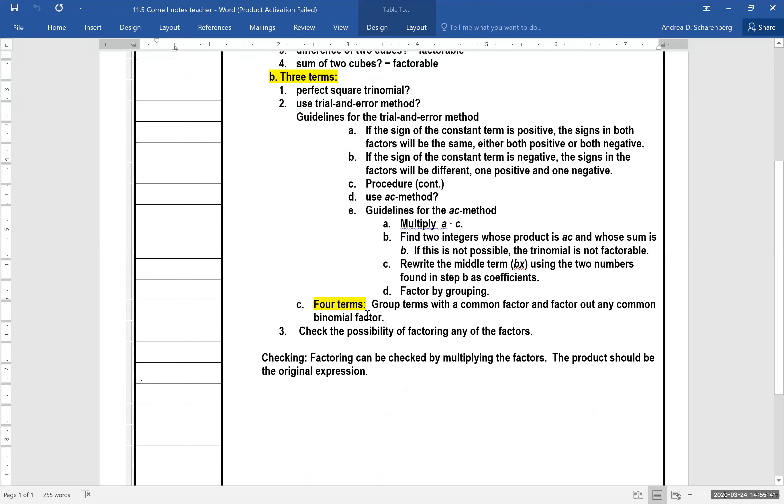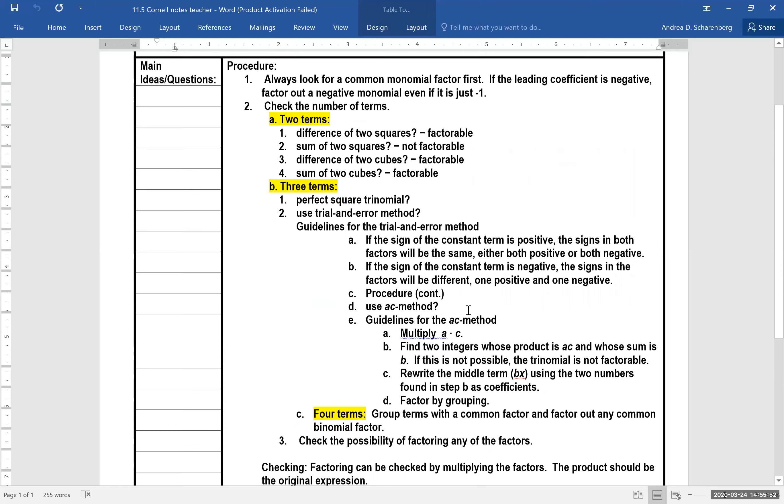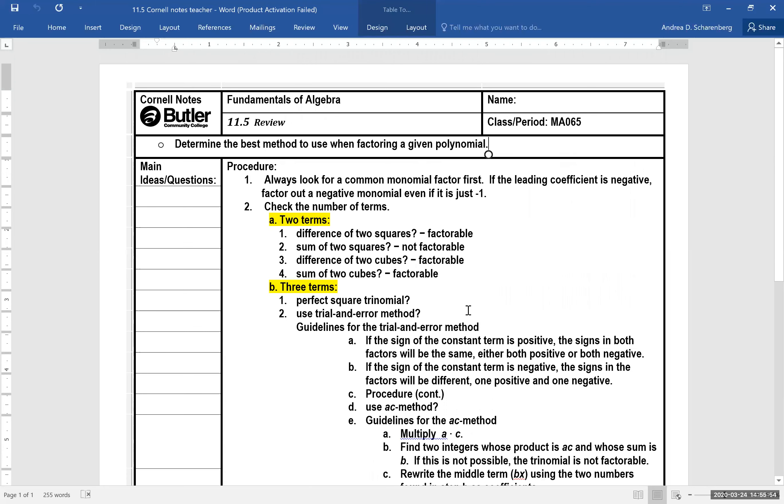Or are there four terms? Meaning do you need to just factor by grouping? Do you need to like group up the factors and then factor out the common number and then finish by factoring by grouping? That is what 11.5 is. It's just a whole bunch of different problems, and just have this little check sheet handy.